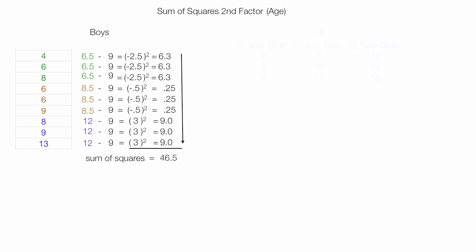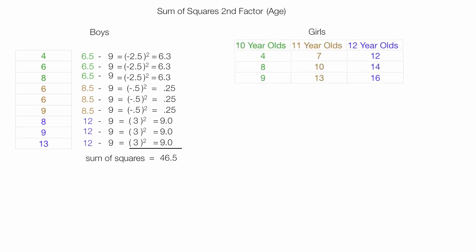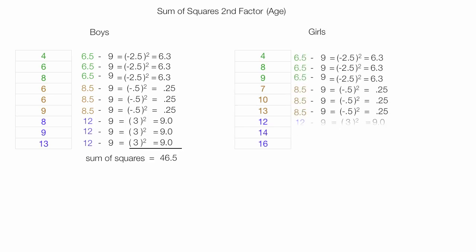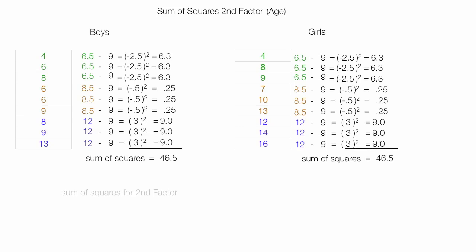I do the same thing for the girls' test scores — organize the data into one big column and repeat exactly what I did before using the appropriate age group averages. When I sum this up, it also equals 46.5. So the sum of squares of the second factor (age) equals 46.5 plus 46.5, which is 93.